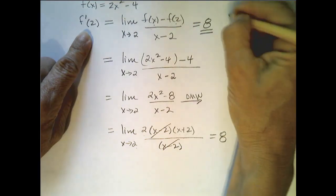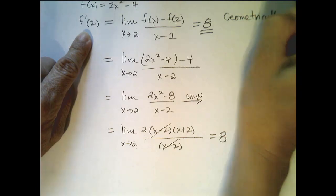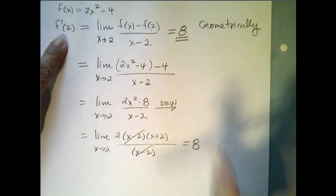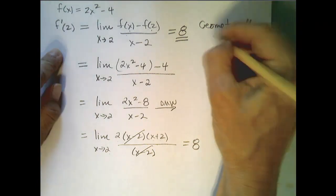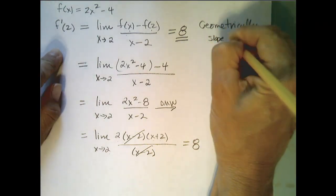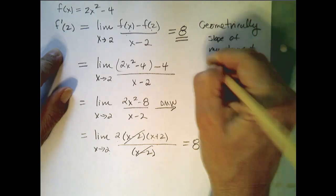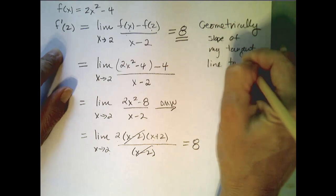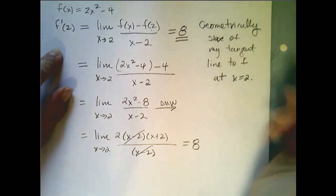Now what does that represent geometrically? You remember? Well, the derivative at 2 is the slope of the tangent line to my function at 2. It's the slope of my tangent line to f at x equals 2. That's what it is geometrically.